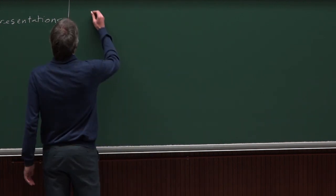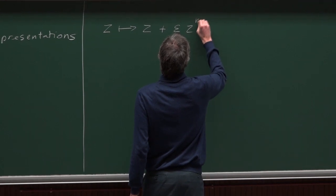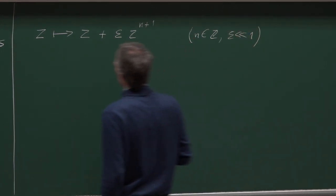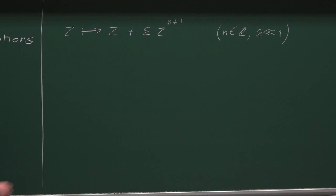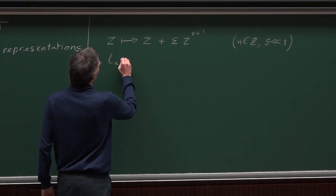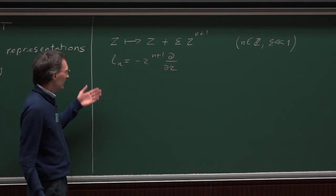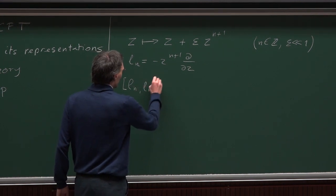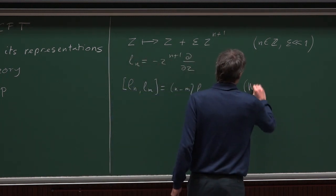Let's consider in particular an infinitesimal holomorphic map: Z goes to Z plus epsilon times Z to the n+1, for any integer n and small epsilon. This map acts on functions of Z through differential operators I will call l_n, where l_n equals minus Z to the n+1 times d/dz. These differential operators form a Lie algebra, with commutation relations [l_n, l_m] = (n−m) l_{n+m}. This algebra is called the Witt algebra.